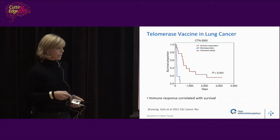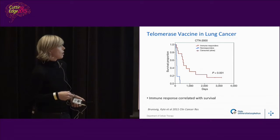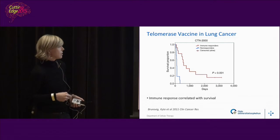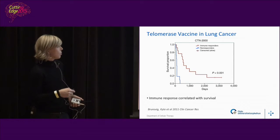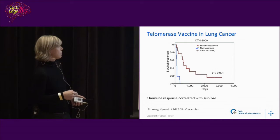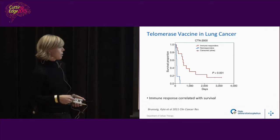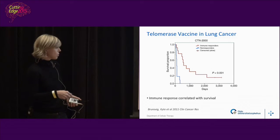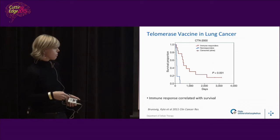There have been several vaccine studies at the Radium Hospital. This is a peptide vaccine study in lung cancer. Patients who responded to the vaccine are shown in red, and those who did not respond are in blue. The survival of responding patients is much longer, and there is a tail of patients that responded very well and survived for several years. So immune response to the vaccine correlates with survival.